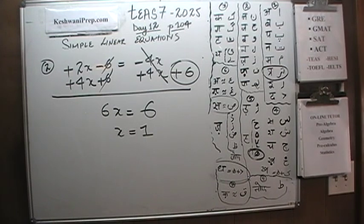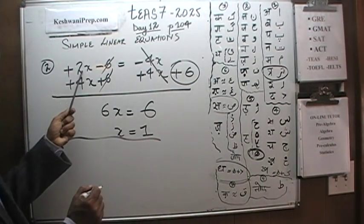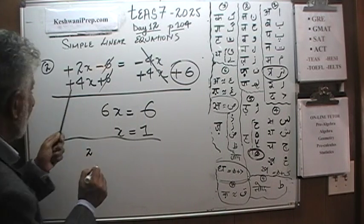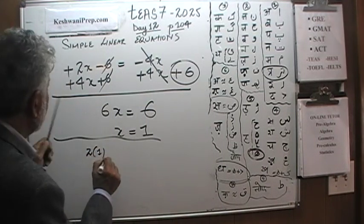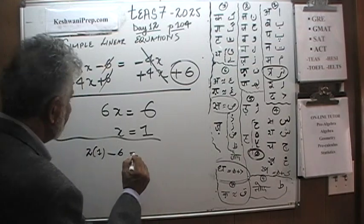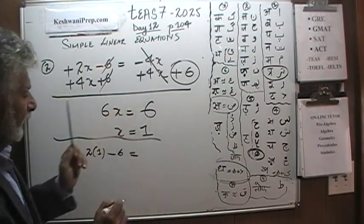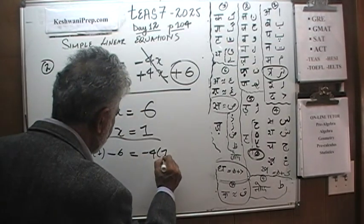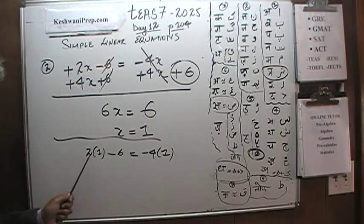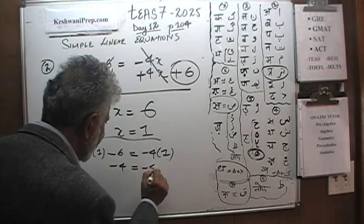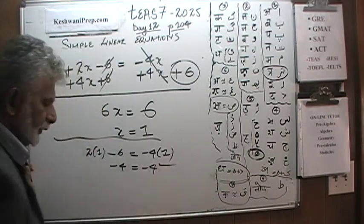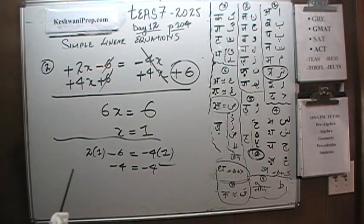And if you wanted to, you can very easily verify it. We were told 2x minus 6 equals negative 4x, and we are claiming x is 1. So 2 times 1 minus 6 has to equal negative 4 times 1. 2 times 1 is 2; 2 minus 6 is negative 4. And that's negative 4 — it checks out. That was number 2.